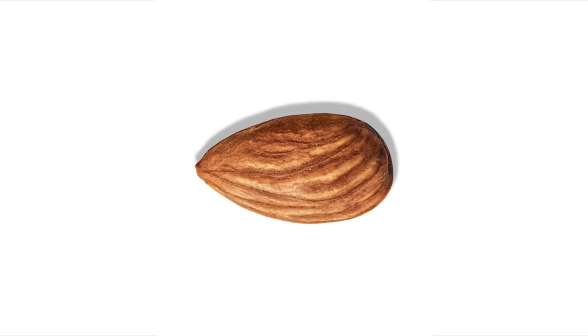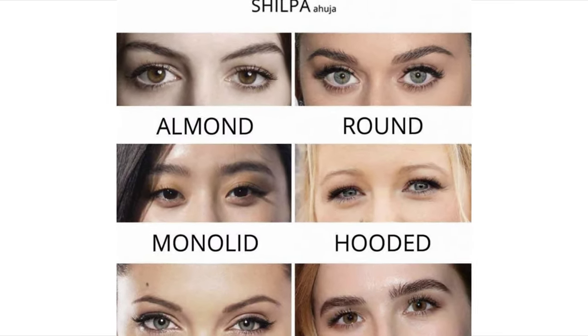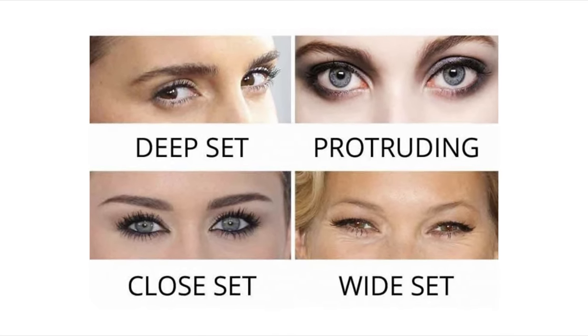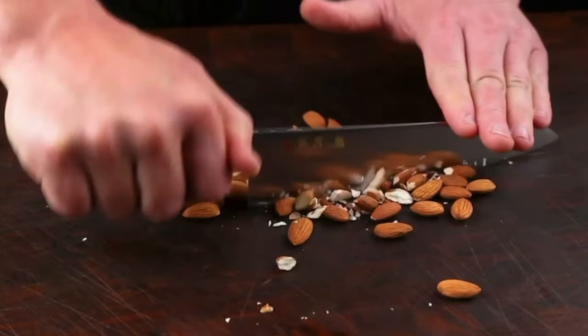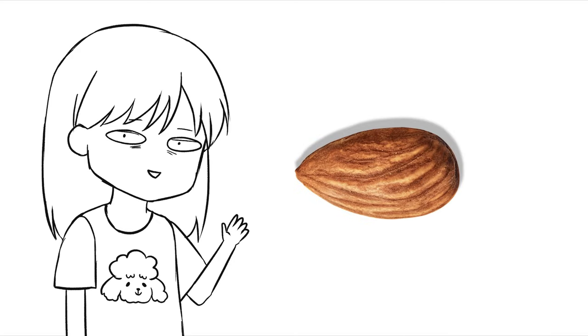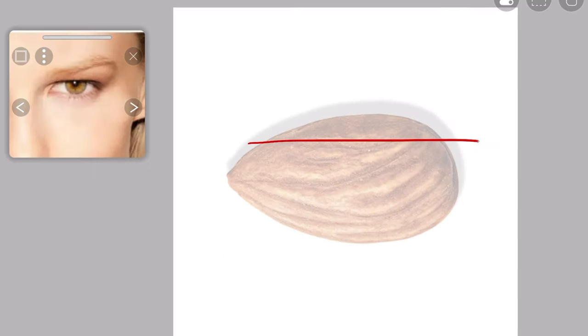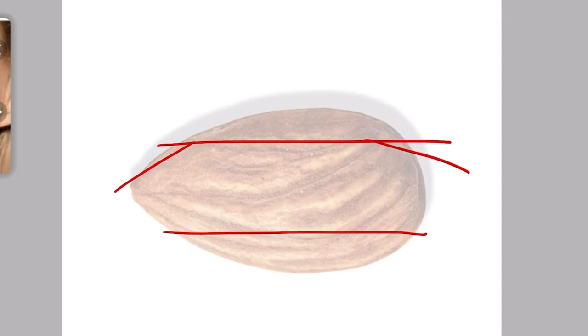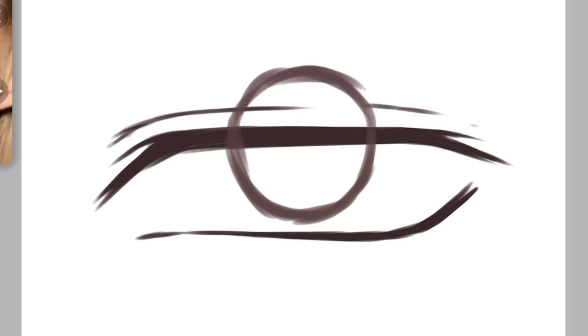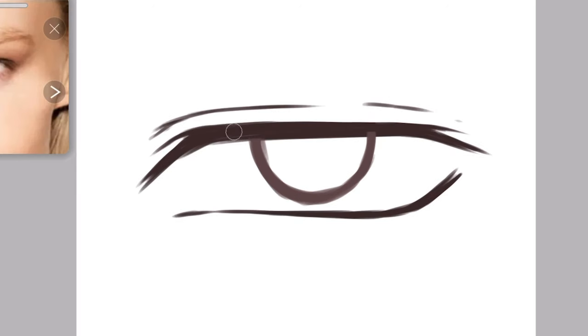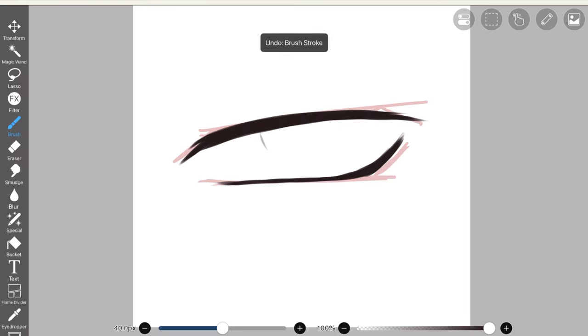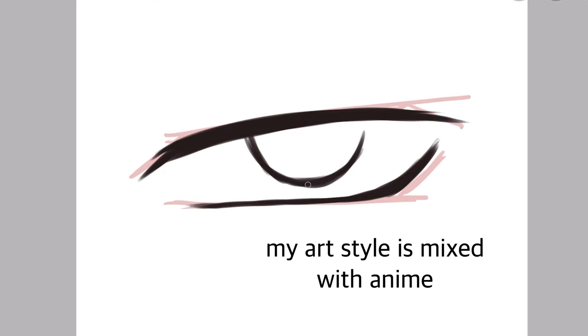Number one: shape. The most common eye shape is the almond, but you can turn it into different eye shapes by slicing the almond. I'll show you using examples. Let's draw hooded eyes — get your almond and slice it like this, then sketch the eye using this as a guide, draw a circle, erase the top, and there you go. Quick disclaimer: my art style is mixed with anime, so it might look really stylized.